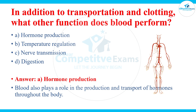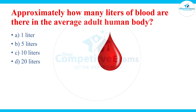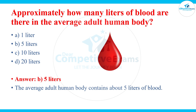Approximately how many liters of blood are there in the average adult human body? The answers are one liter, five liters, ten liters, and twenty liters. The right answer is five liters — the average adult human body contains about five liters of blood.